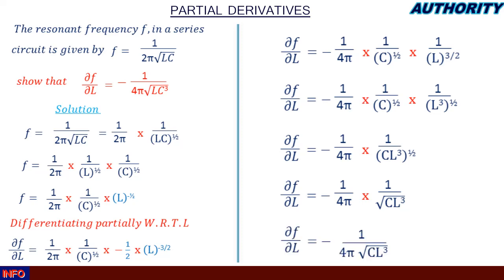Combining everything together: the partial derivative of f with respect to L is equal to −1 / (4π√(CL³)). Hence the proof. Thank you very much for watching — if you are new to our YouTube channel, please like, subscribe, and share our videos. Stay blessed!